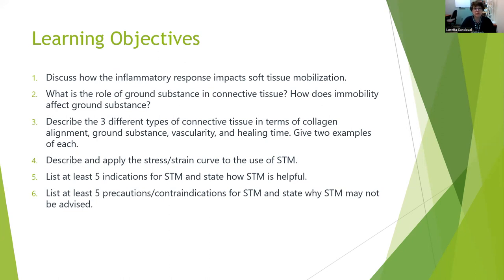I want you to know the role of ground substance in connective tissue and how immobility affects ground substance. Describe three different types of connective tissue in terms of collagen alignment, ground substance, vascularity, and healing time, and be able to give two examples in the body of each. Describe and apply the stress-strain curve to use of soft tissue mobilization. And indications, contraindications, and precautions for soft tissue mobilization — how it is helpful and when it is not advised.